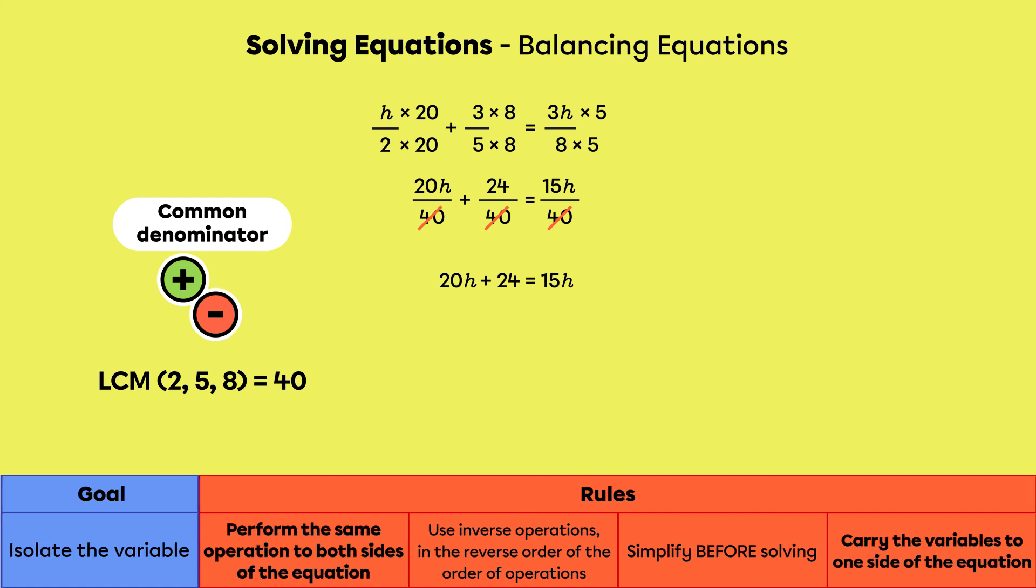Next, we solve the equation by first subtracting 20h and then dividing by negative 5 on each side. The solution is still negative 4.8. All that's left is to verify the answer. Time for you to try it out.